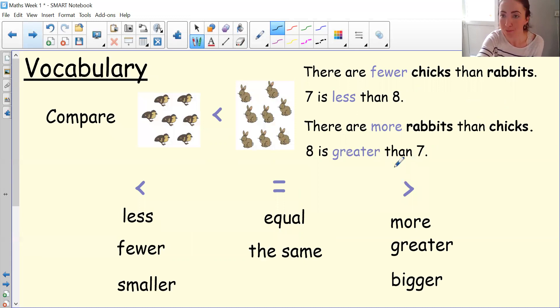Our vocabulary for today's lesson. We're using that vocabulary of less, fewer, smaller, which is represented by this symbol here, less than. Equal to or the same, represented by this symbol here. And more than or greater or bigger, represented by this symbol here, as we've just talked about in our Fastify starter. We're using that word compare to compare two amounts today.